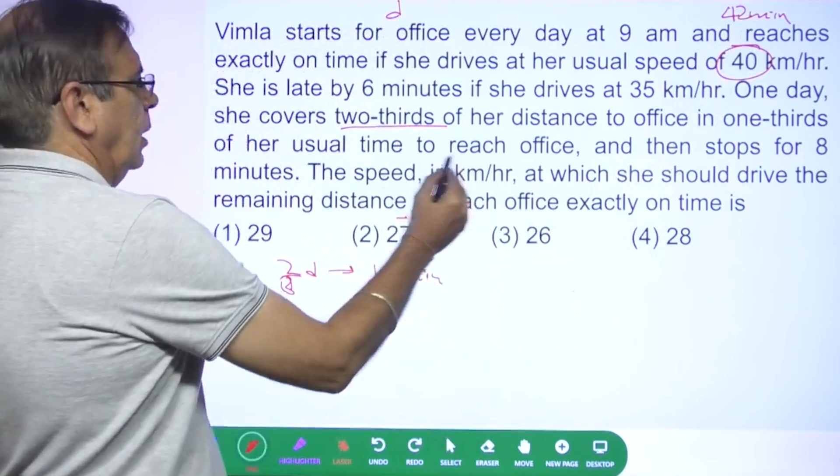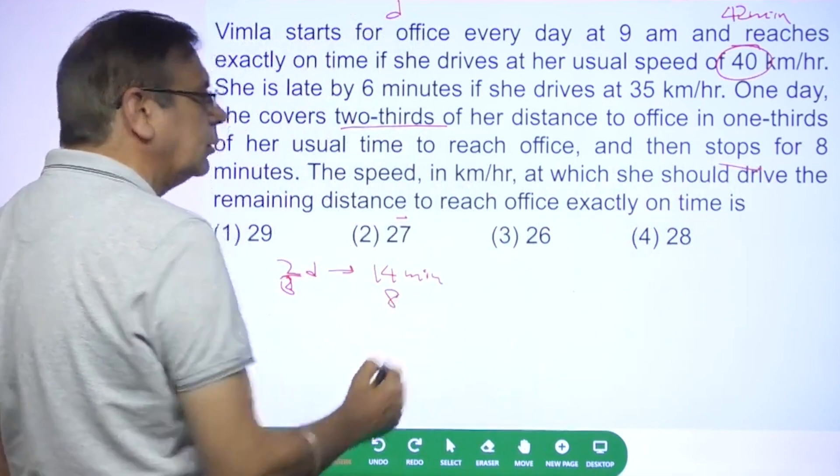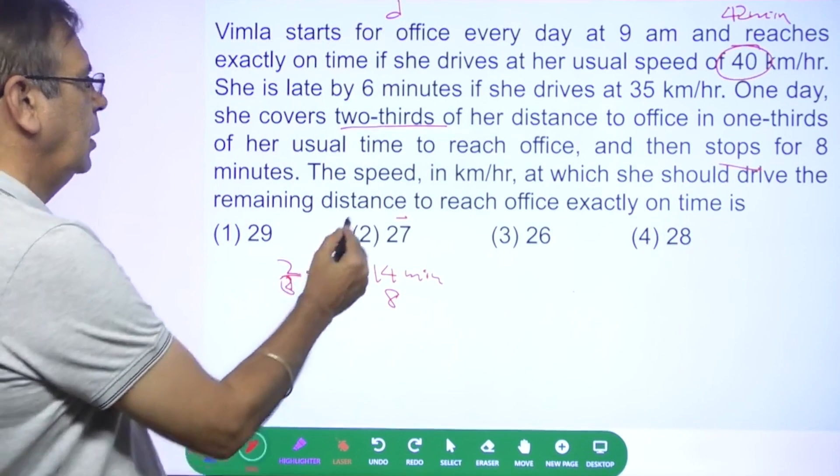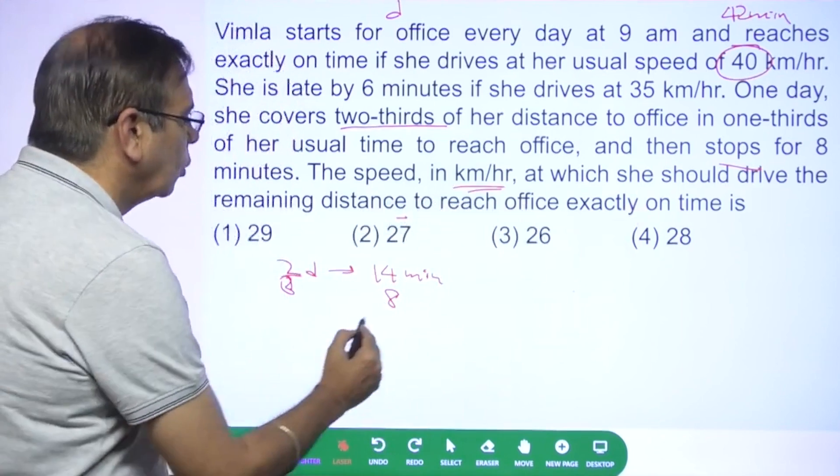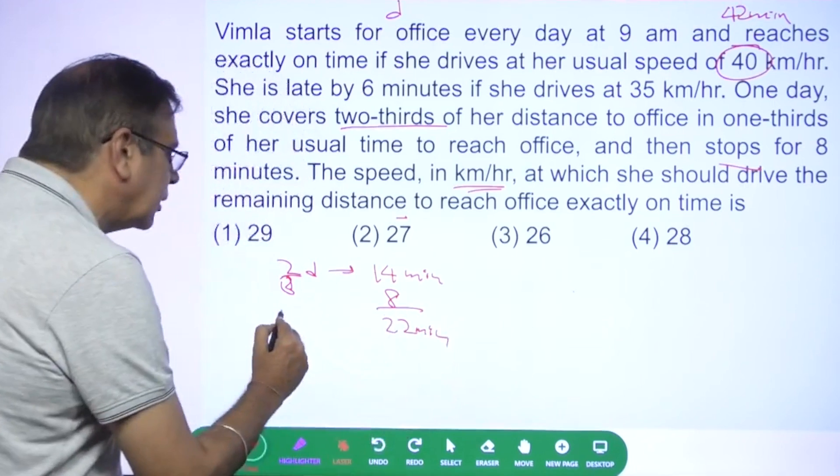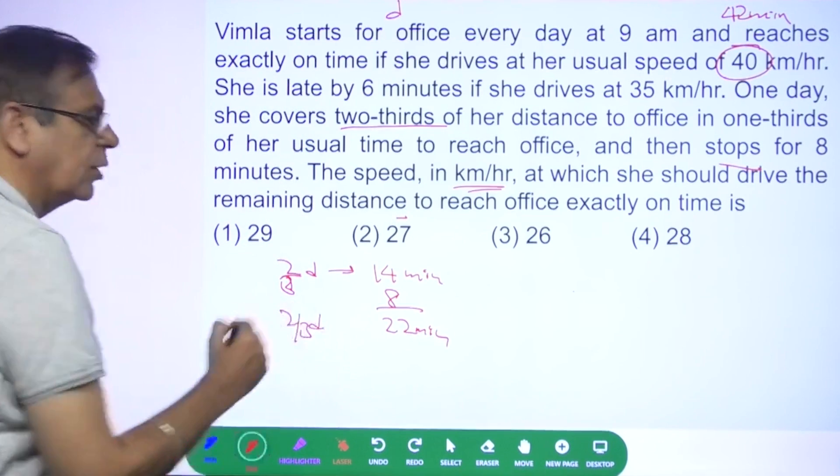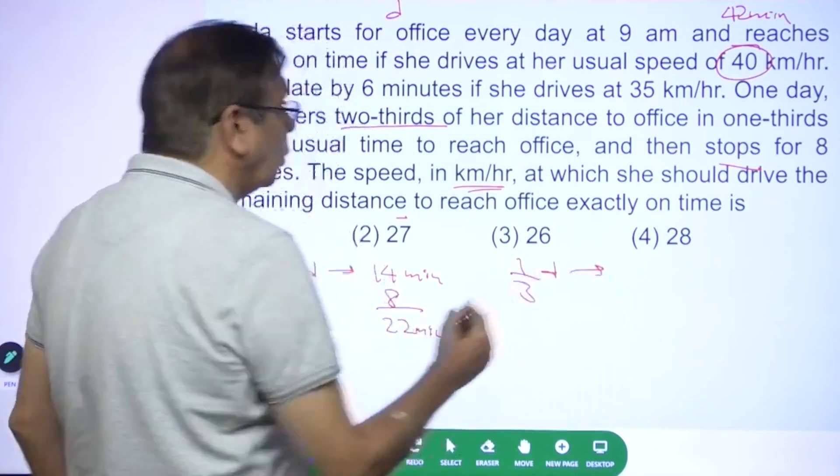To reach office and then stops for 8 minutes. Then 8 minutes, zero distance covered. The speed in kilometers per hour at which she should drive the remaining distance. So how much time has gone? 22 minutes. In 22 minutes she has covered two thirds of the distance. So the remaining one third of the distance she has to do it in...